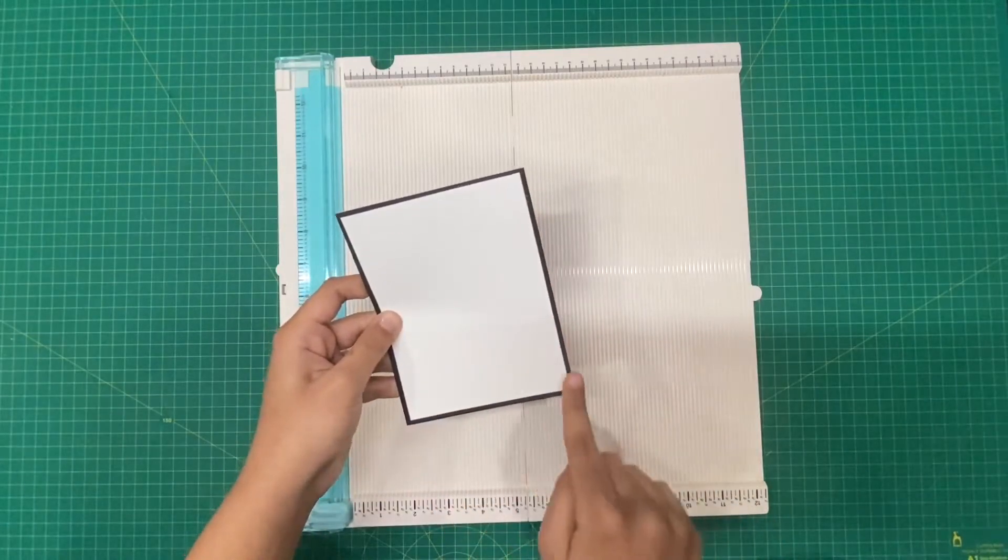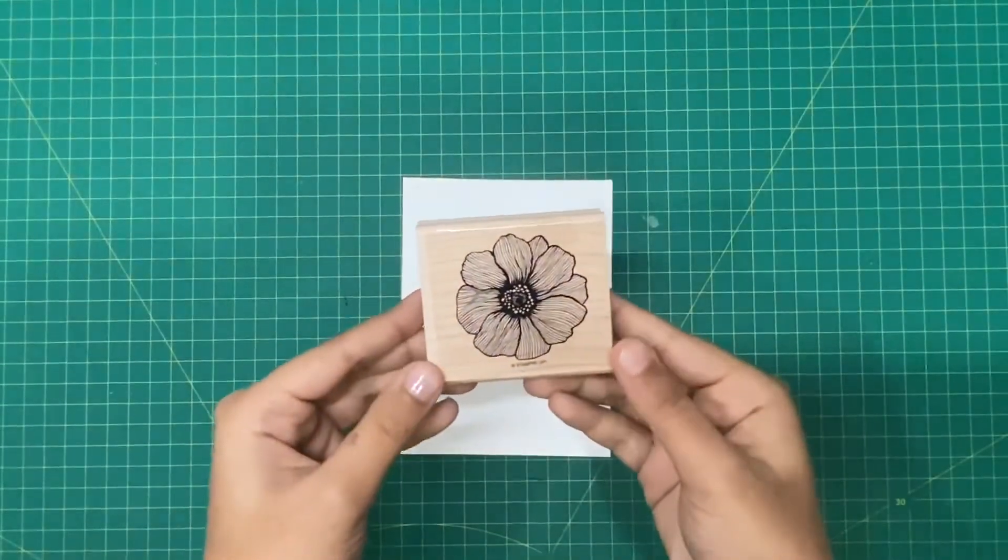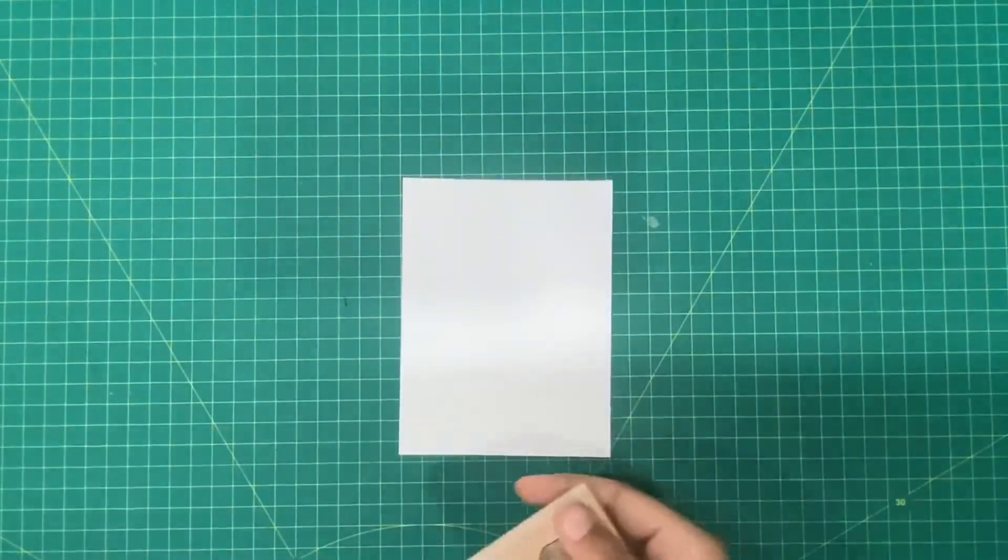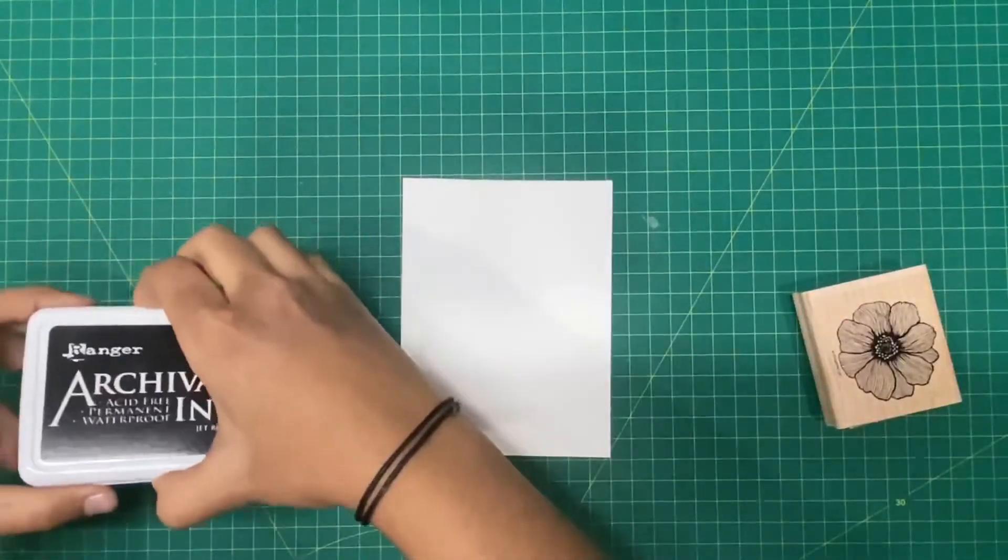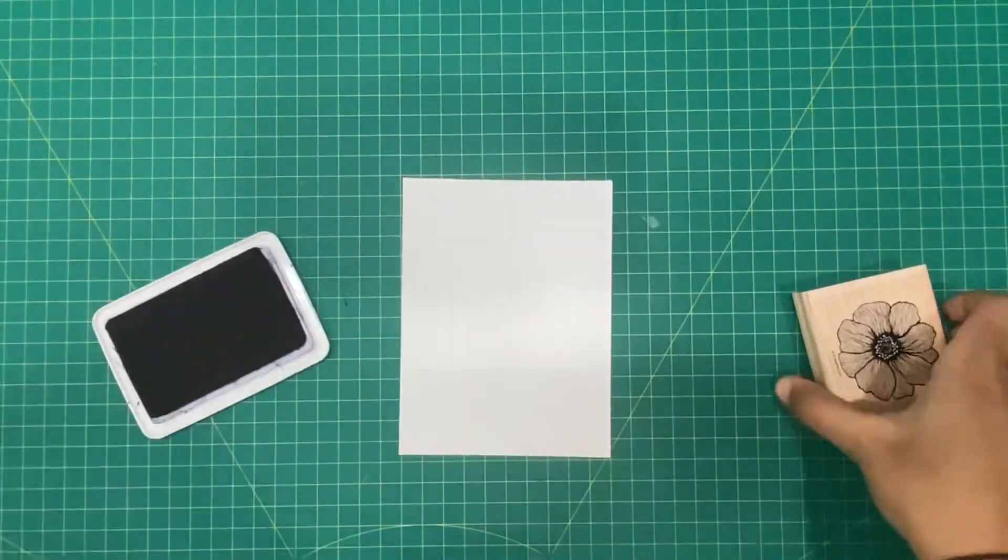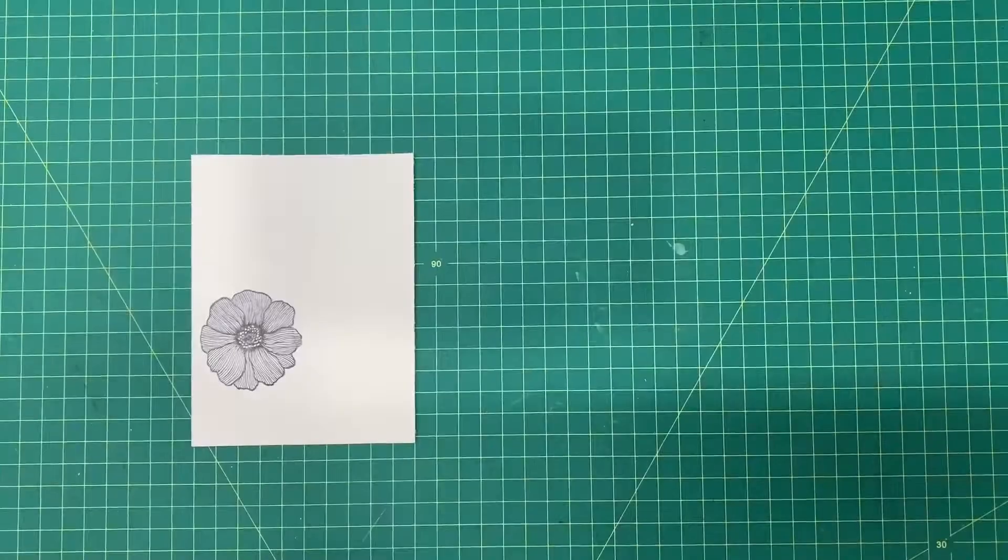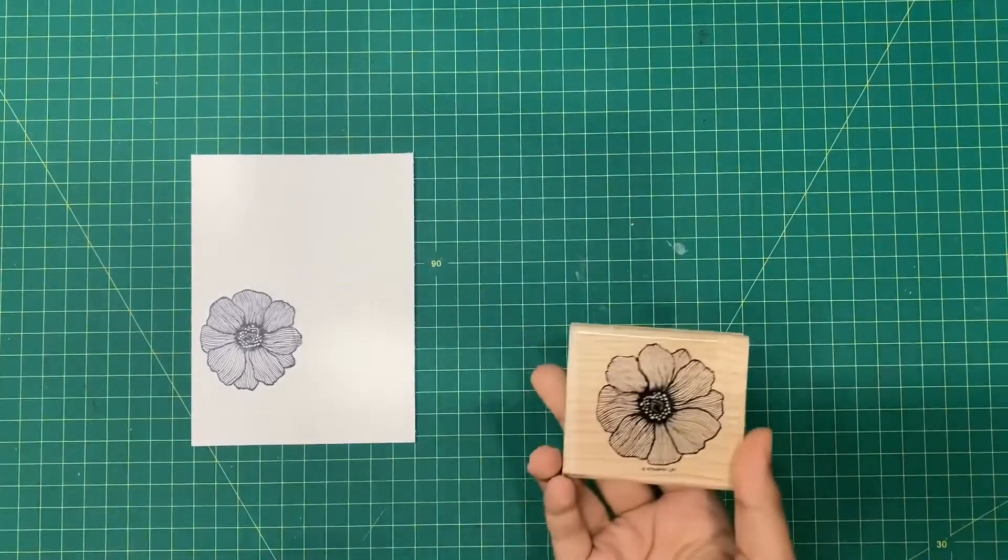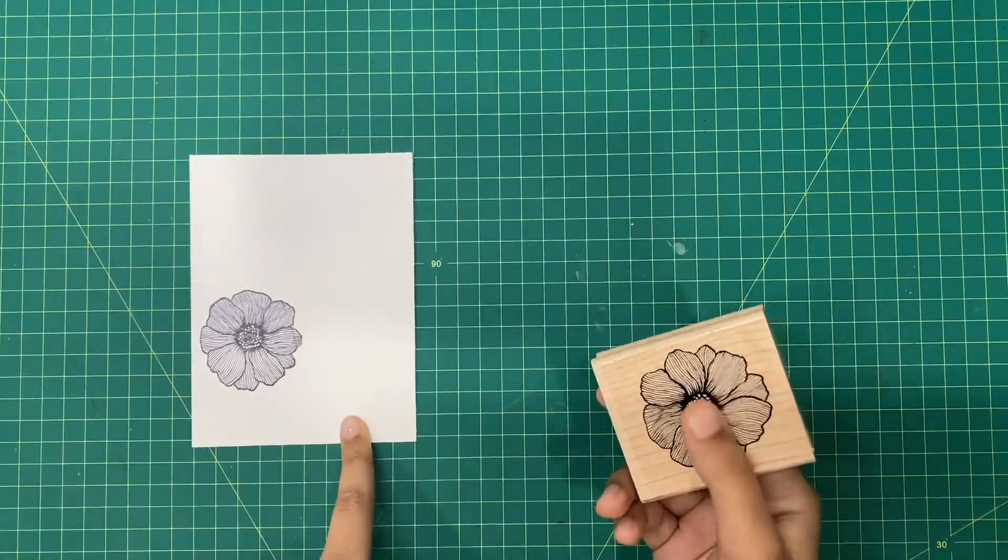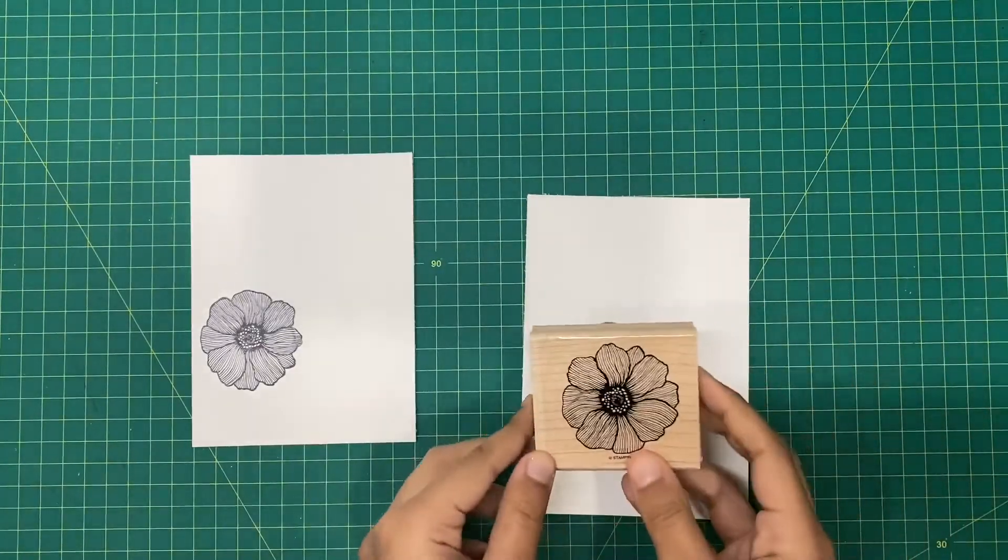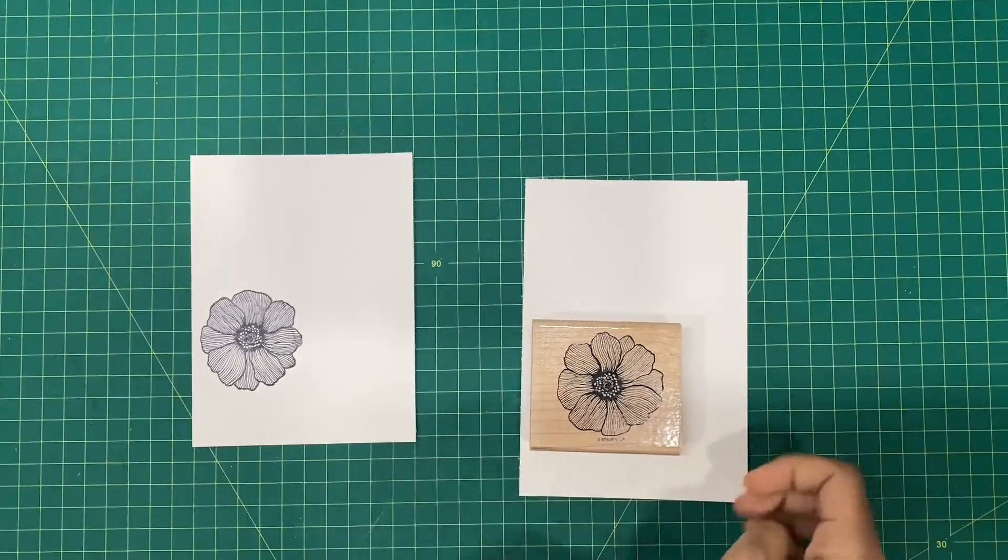When we start our dye ink technique on our mat cardstock, I'm going to take this sunflower stamp that I have and stamp it around this area on my mat. I'm going to take my black ink and stamp. Once I'm done stamping my sunflower image on my white mat cardstock, I'm going to take another white piece of scrap paper and stamp this again and cut it out in order to do our dye ink technique.